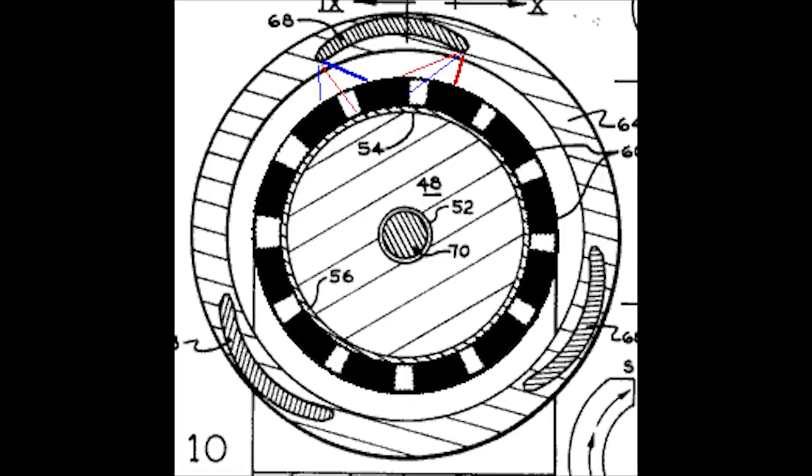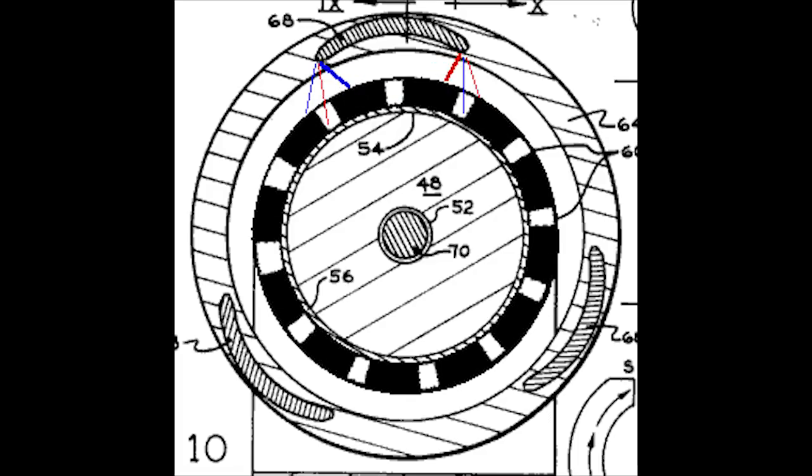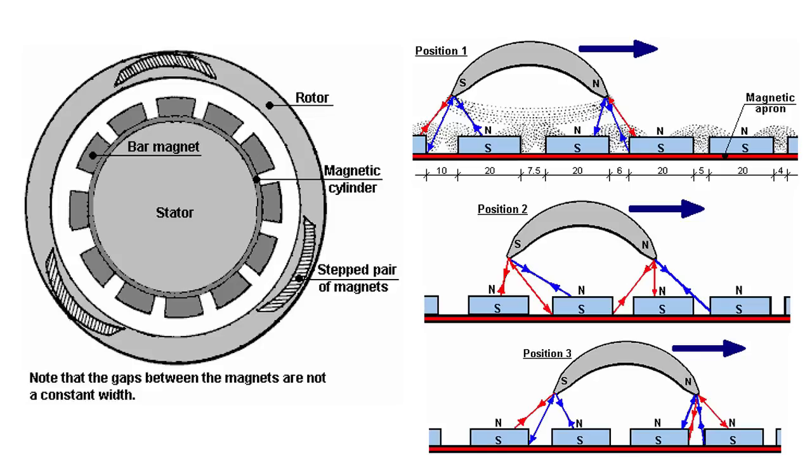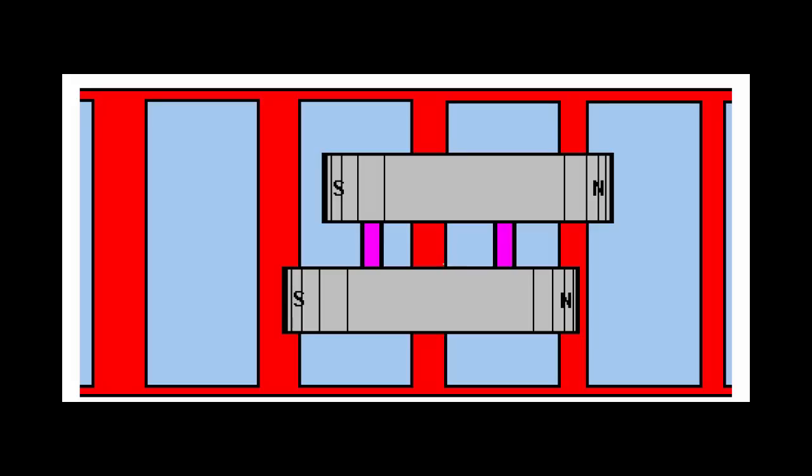The patent states that the armature magnet is 3.12 inches long and the stator magnets are 1 inch wide, 0.25 inches deep, and 4 inches long. It also states that the rotor magnet pairs are